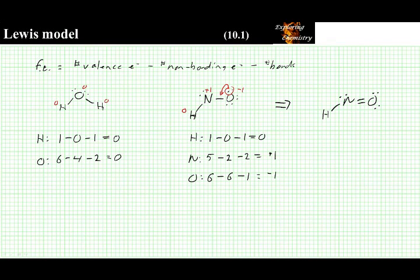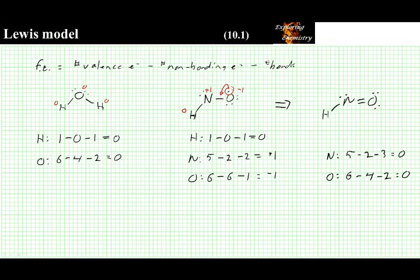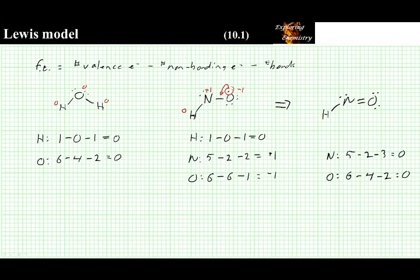And hydrogen we haven't touched, so its formal charge is still zero. Looking at the nitrogen, we have five valence electrons, two non-bonding electrons, and it is now forming three bonds. So, it has a formal charge of zero. And for oxygen, six valence electrons, four non-bonding electrons now, and it is forming two bonds. So, it also has a formal charge of zero. So, given that our goal is to minimize the formal charges, and we have minimized them all to zero, this is the correct structure for this entity.